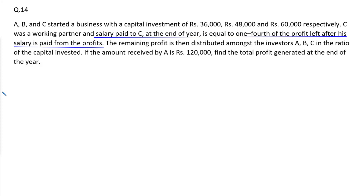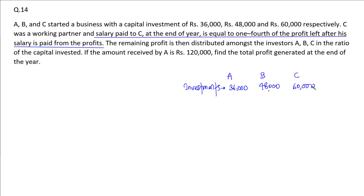The profit is distributed between A, B and C in a ratio of their investment. Their investments are 36,000, 48,000 and 60,000. If we find the ratio of their investments, three zeros get cancelled out — twelve threes are 36, twelve fours are 48, twelve fives are 60. So the ratio of their investment is 3:4:5.